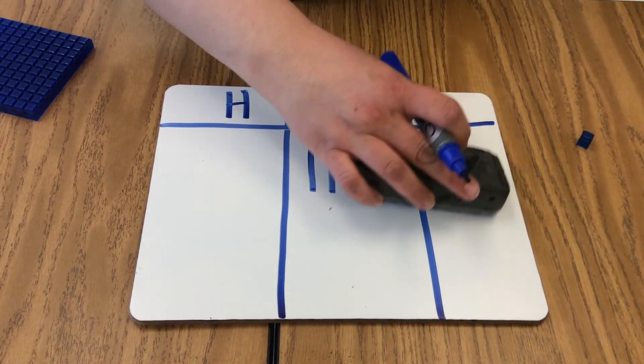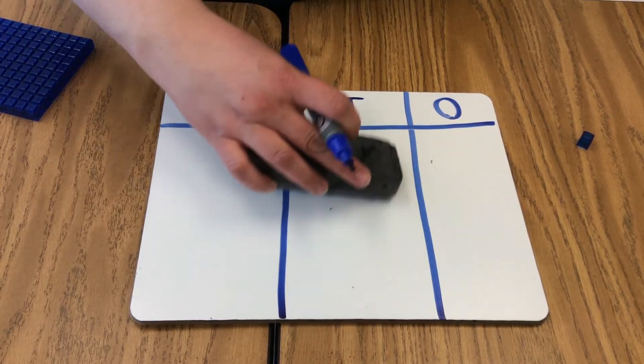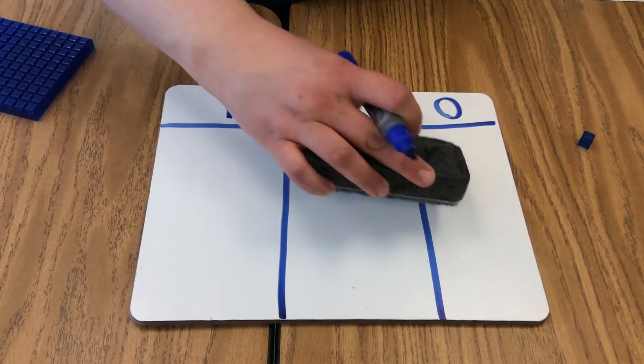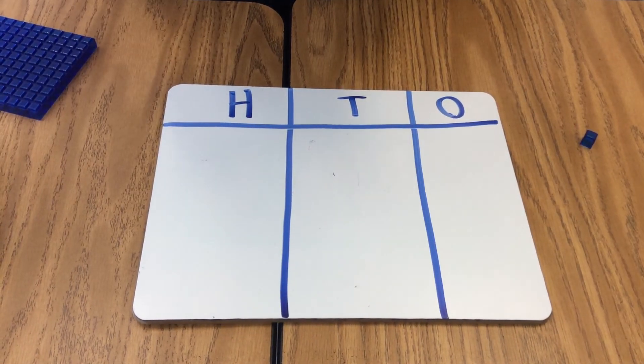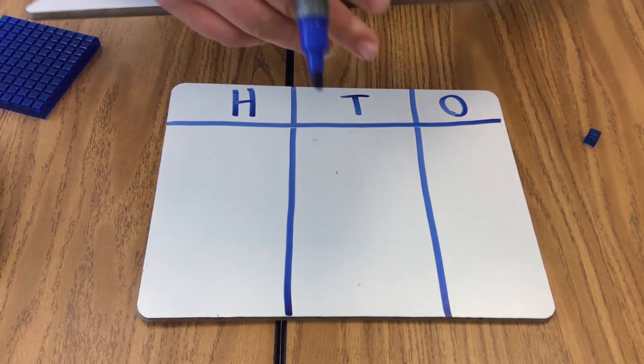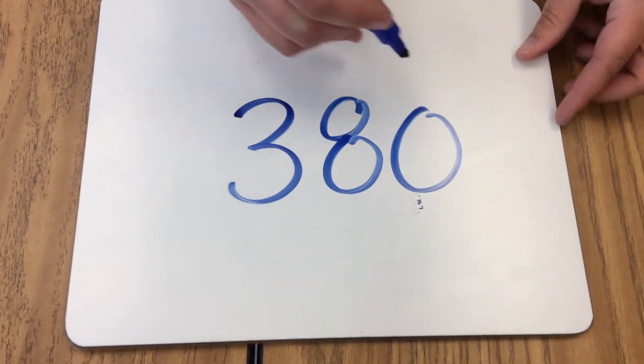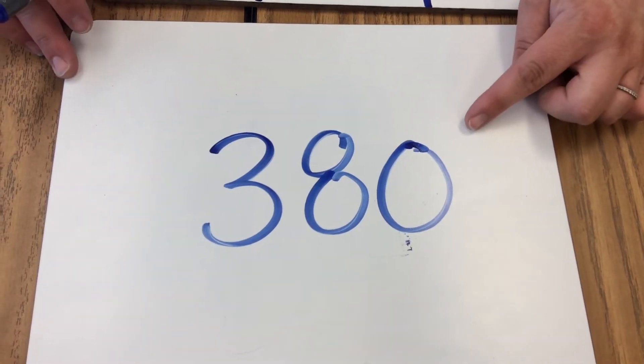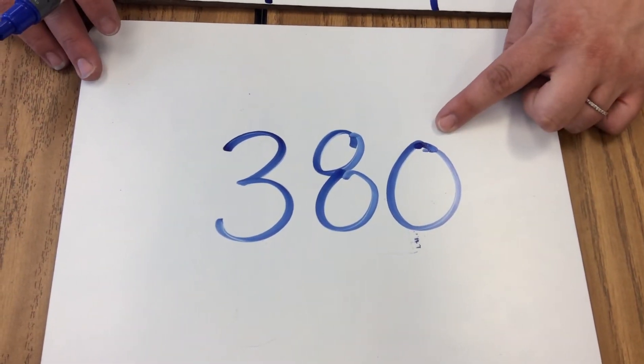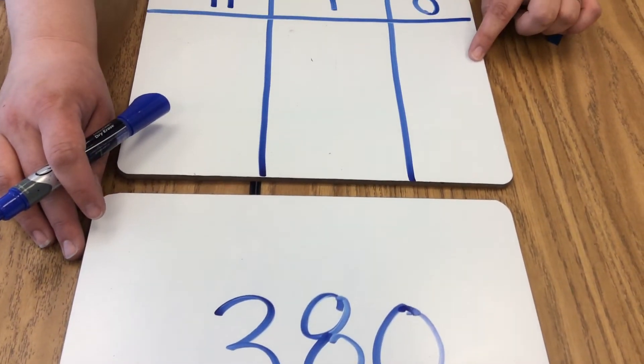We're going to start with an empty HTO chart. This time, we're going to model the number 380. Now on the number 380, we don't have any ones, so we're going to leave our ones column blank.